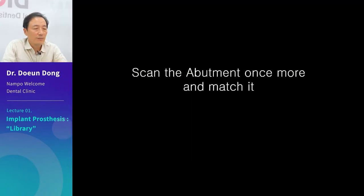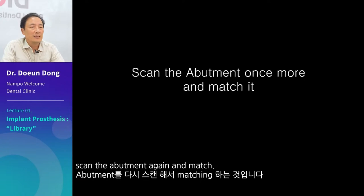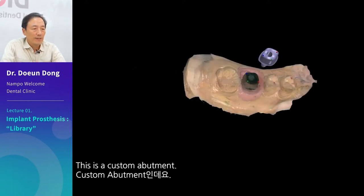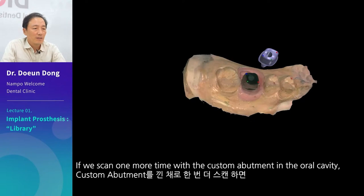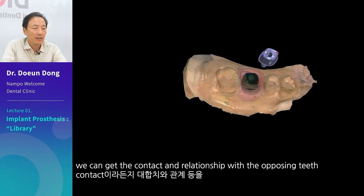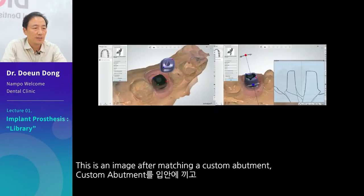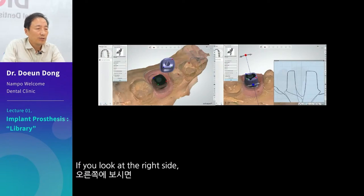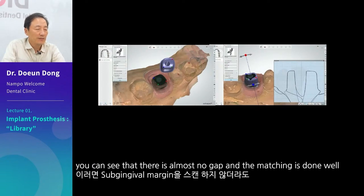To make merging easy, scan the abutment again and match. This is a custom abutment. If we scan one more time with the custom abutment in the oral cavity, we can get the contact and relationship with the opposing teeth with much more precision. This is a cross-sectional drawing — you can see that there is almost no gap and the matching is done well.